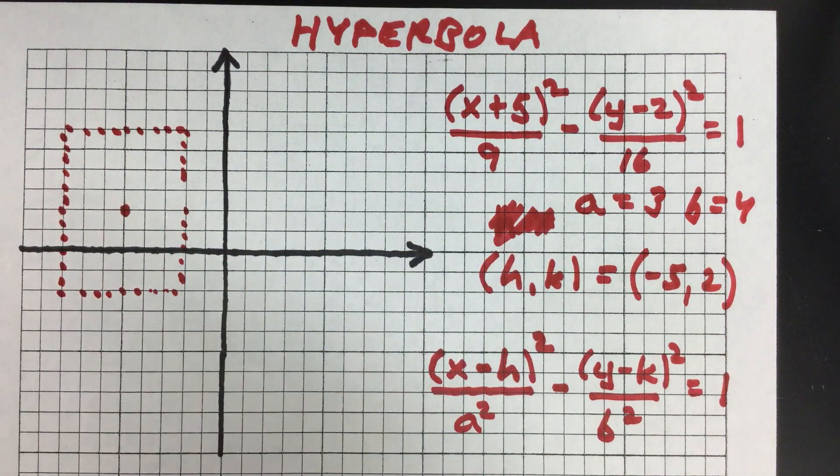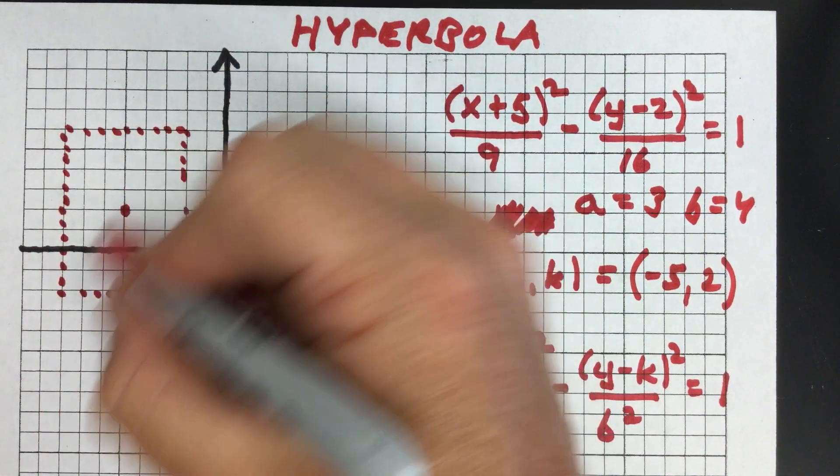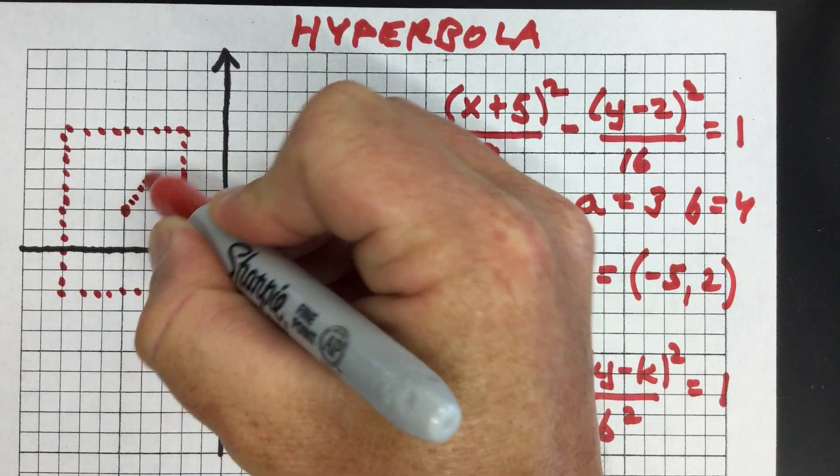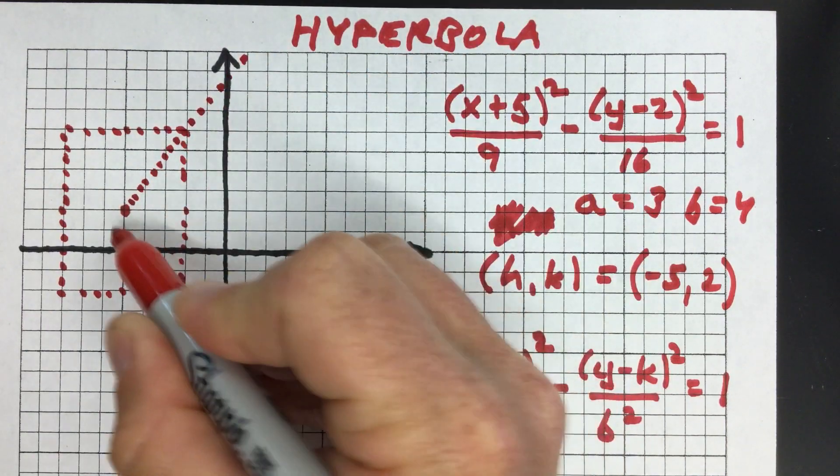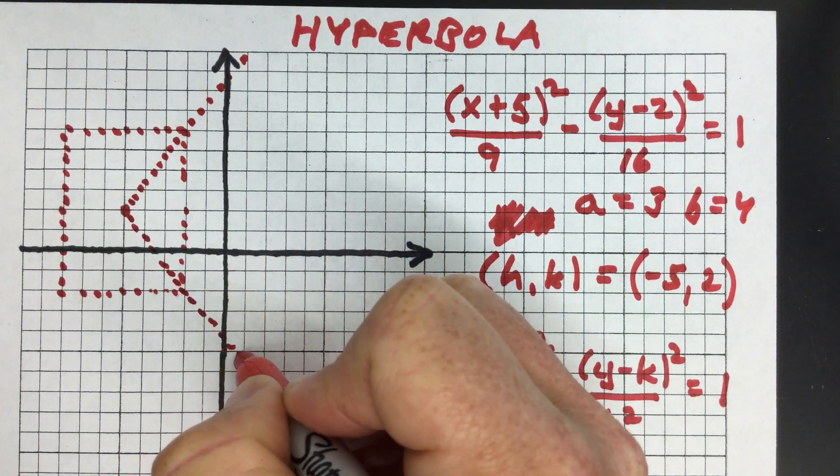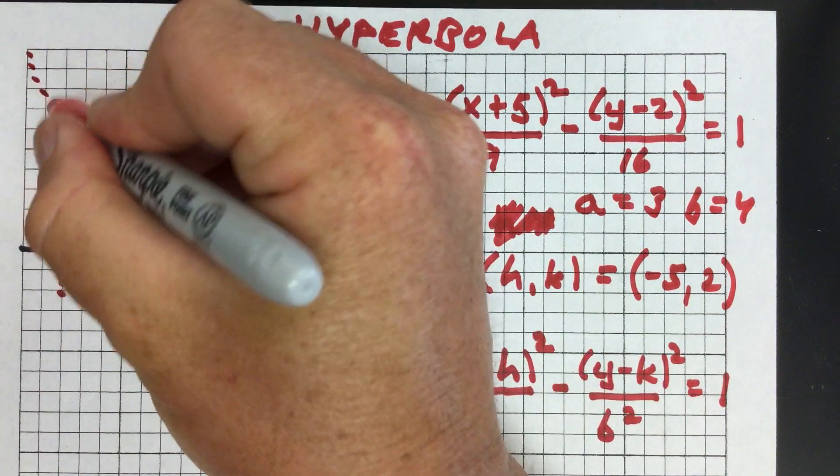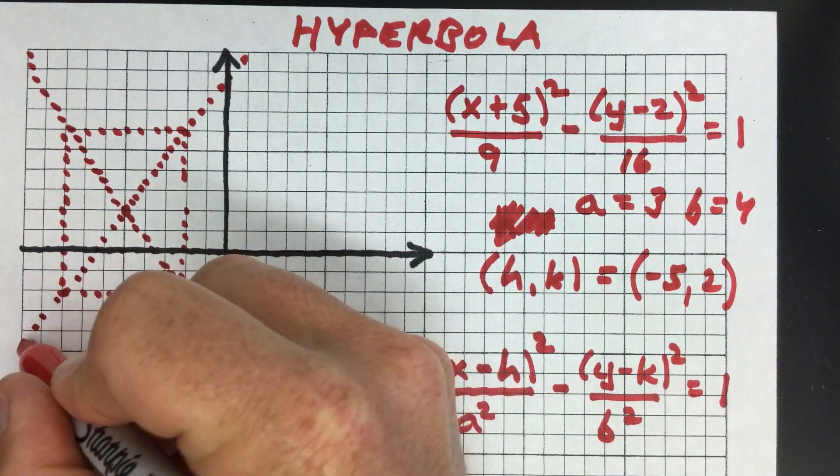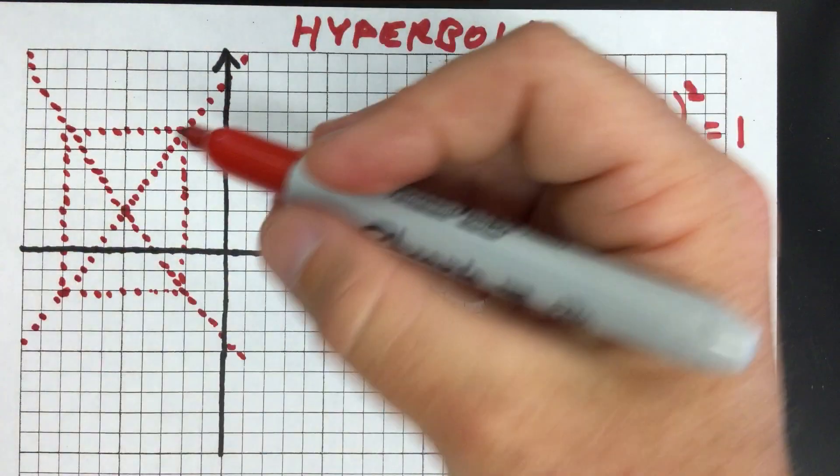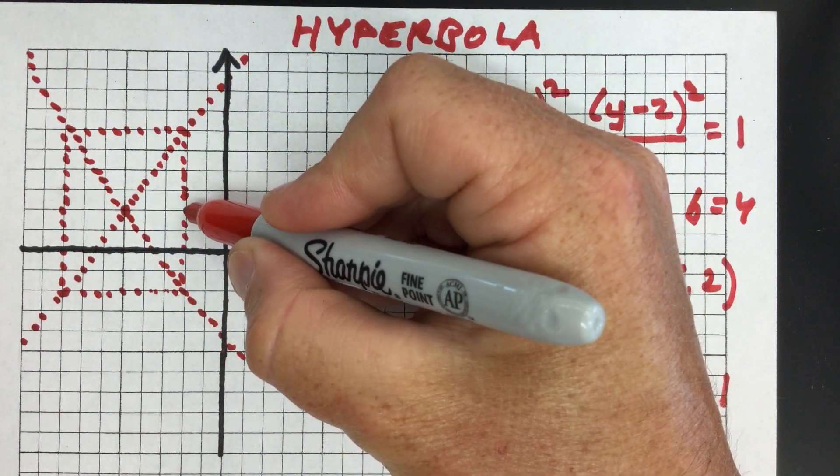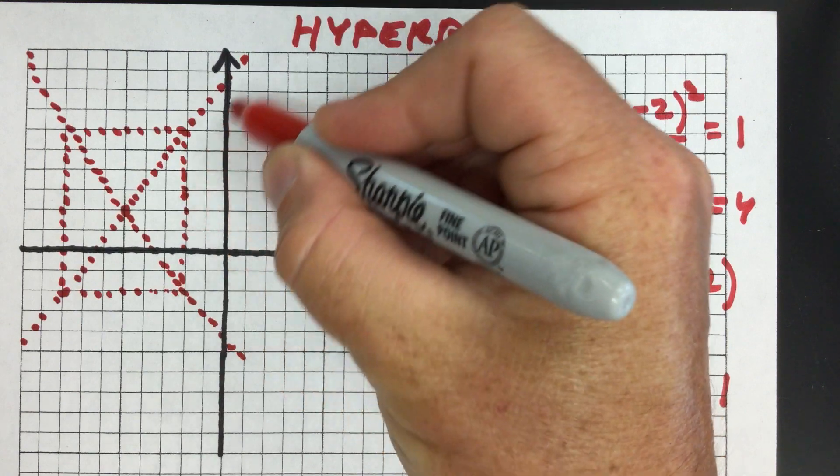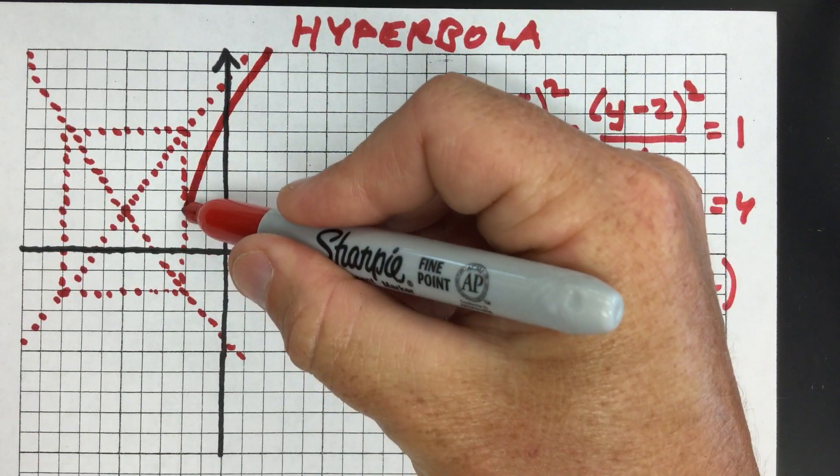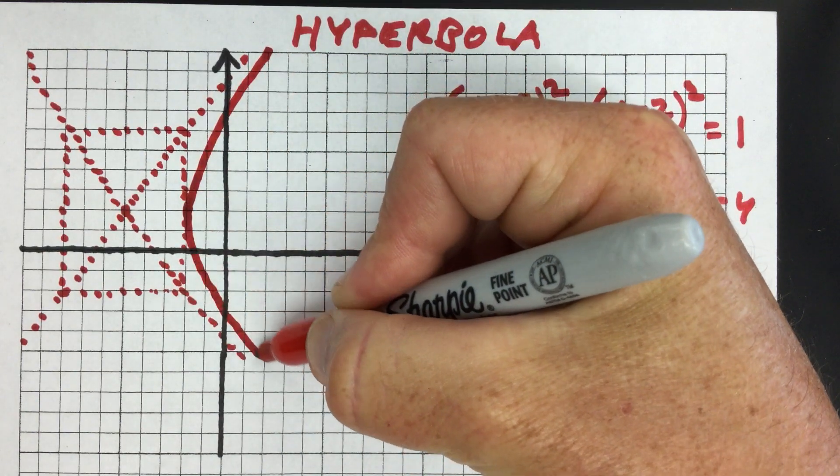Now using the diagonals of this box you can construct what are called the asymptotes of the hyperbola. If you connect the lines and draw the diagonals of the box, it's going to look like this. Your hyperbola is going to asymptotically approach these diagonals, and so your hyperbola is going to look like this.